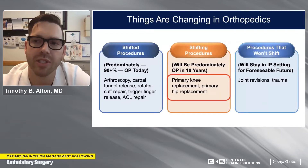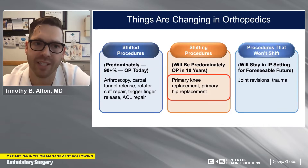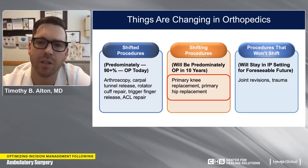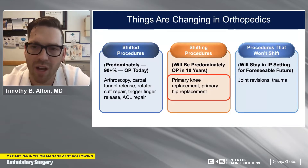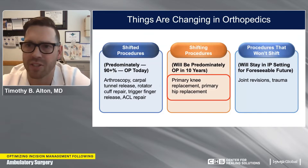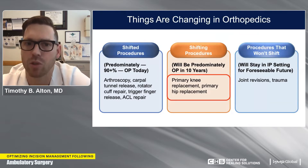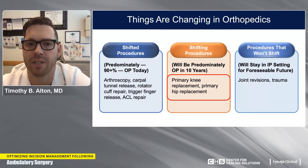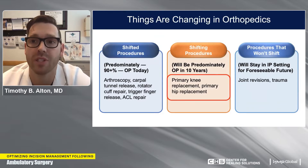Looking at which orthopedic procedures are shifting to the outpatient setting: arthroscopy, carpal tunnels, rotator cuffs, and ACLs have already shifted. Procedures unlikely to shift include joint revisions and trauma surgeries — implants are expensive, patients are sicker, and surgeries more complicated. But primary knee replacements and primary hip replacements will mostly or predominantly be outpatient in the next 10 years.